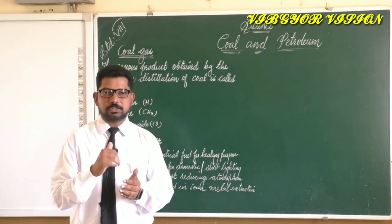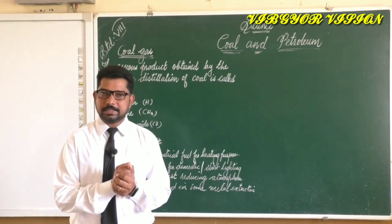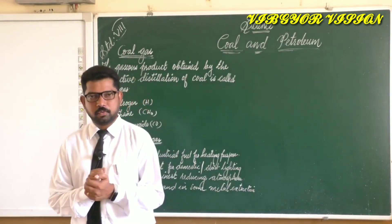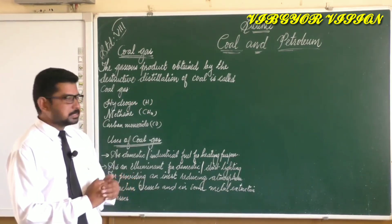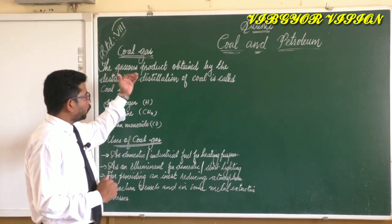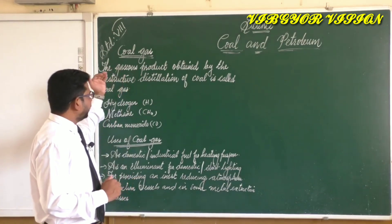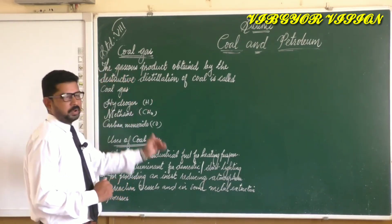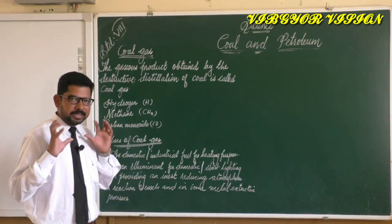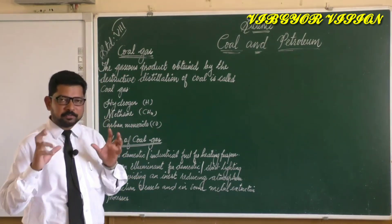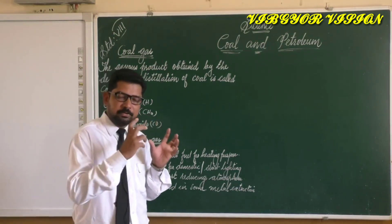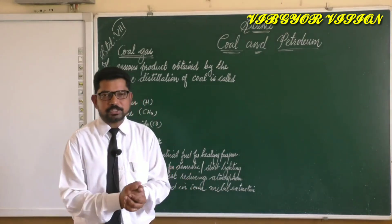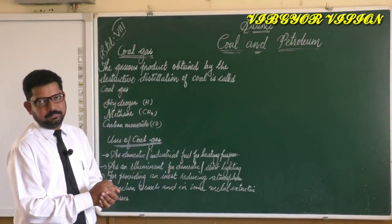Next is coal gas. Coal gas is another product obtained from the destructive distillation of coal. The gaseous product obtained by the destructive distillation of coal is called coal gas.